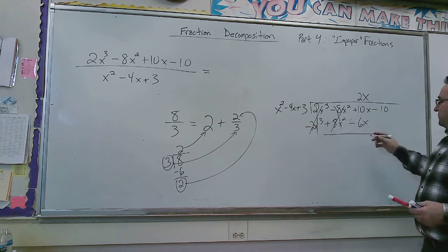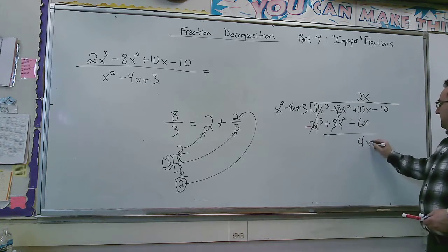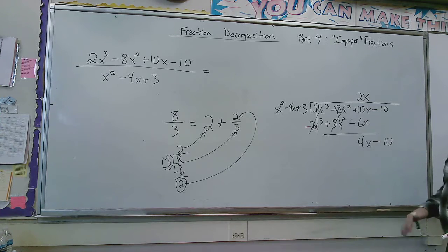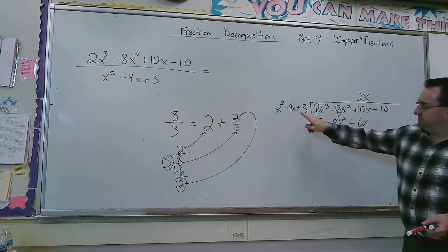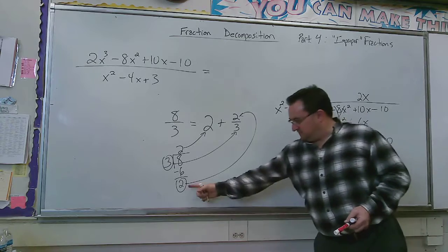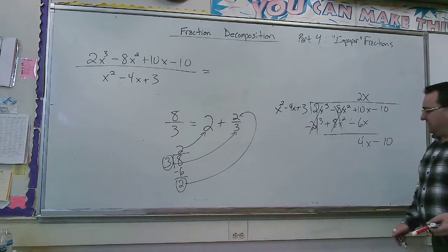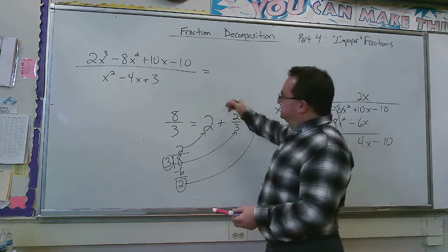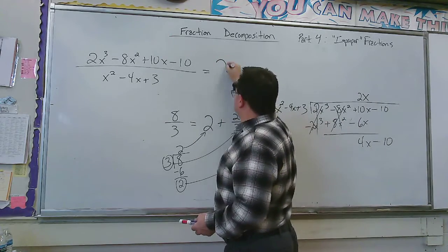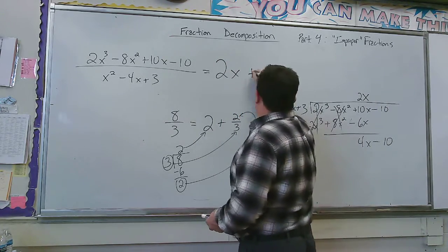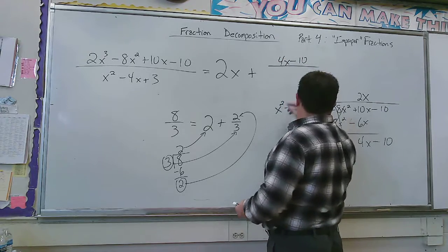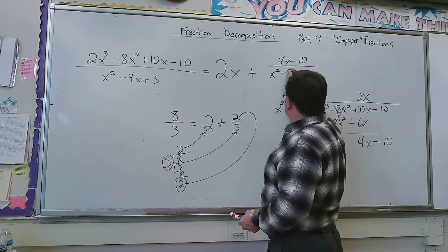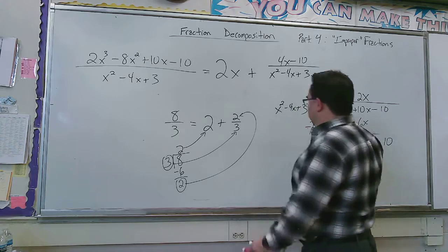So that goes away. And this goes away. So I'm left with 4x minus 10. And this is now smaller than what I'm dividing by. That is smaller than what I'm dividing by. So this is part of the remainder. So what this tells me is this breaks down into 2x plus 4x minus 10 over x squared minus 4x plus 3.